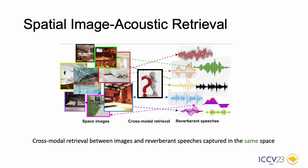In this work, we tackle a novel cross-modal retrieval problem termed as Spatial Image Acoustic Retrieval. Traditionally, visual audio retrieval tasks focus on the common semantics corresponding to the sounding object, such as a visual input containing a dog being paired with the sound of a dog barking. In this work, we focus on the retrieval task that is corresponded based on the space where the sound happens.